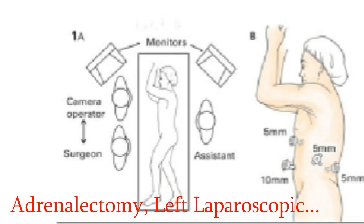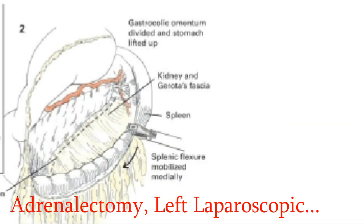Details of procedure — the operative exposure of the left adrenal is shown first. The splenic flexure of the colon is mobilized using an ultrasonic device so as to expose the kidney. The dissection is continued and the lesser sac is entered by separating the greater omentum from the splenic flexure and transverse colon.